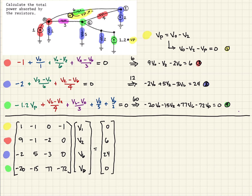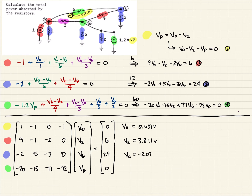We can punch this into any scientific calculator or apply linear algebra methods. When we do that, V0 equals 0.631 volts, V2 equals 3.811 volts, V6 equals minus 2.07 volts, and VP equals minus 3.18 volts.